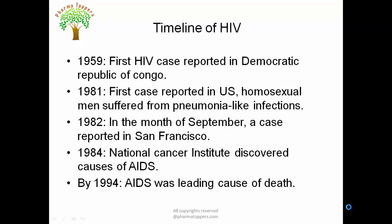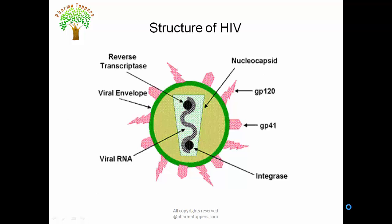On further analysis, these men were found to be HIV positive. In 1982, a case was reported in San Francisco. By 1984, the National Cancer Institute discovered the causes of AIDS — which virus is responsible and how it establishes infection in the human body. By 1994, within 10 years, AIDS had become one of the leading causes of death, meaning the virus had spread all over the world.